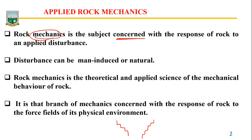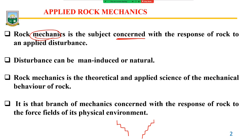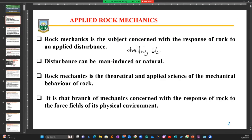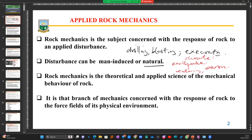These disturbances can be man-made or natural. Some man-made disturbances include drilling, blasting, and excavation — just a few of the many things we do to cause disturbance to rock. On the natural side, we have earthquakes, weathering, erosion, and floods.